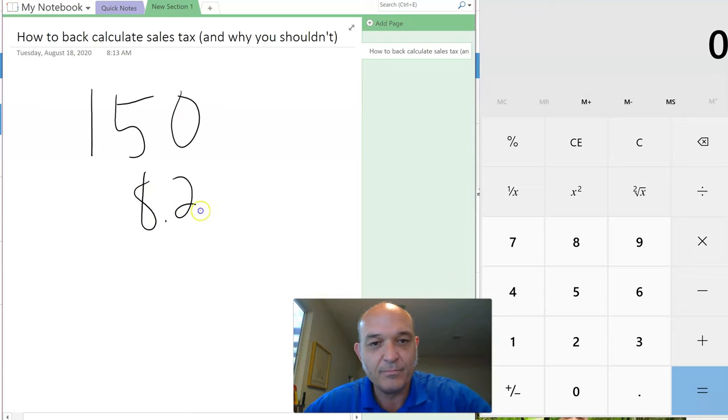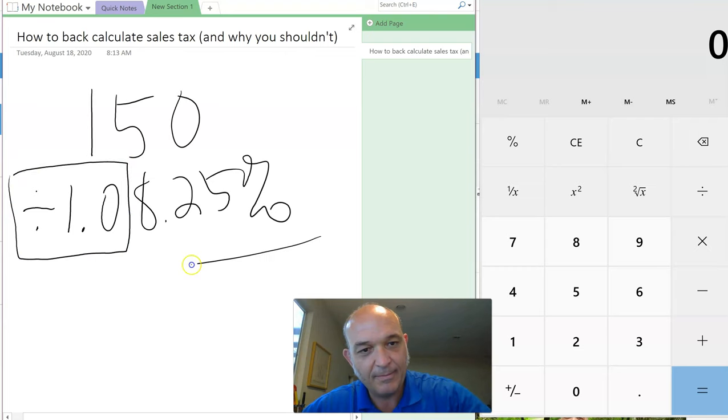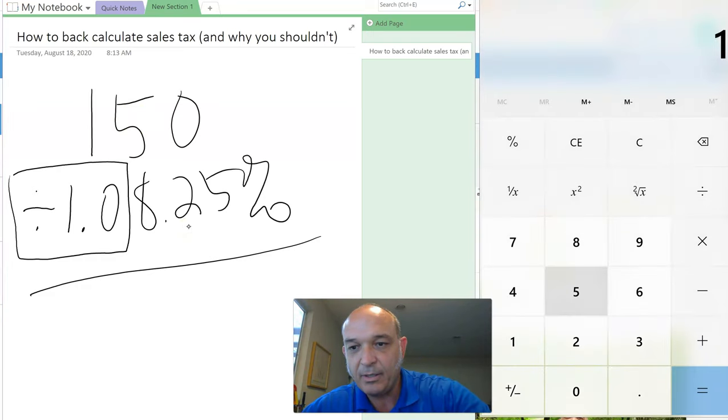So how do you calculate this? You make a dividing sign and a 1.0. Alright, that's what you do—divide, dividing sign and 1.0. So what's that look like? $150 divided by 1.0825 equals...